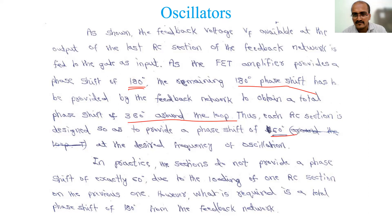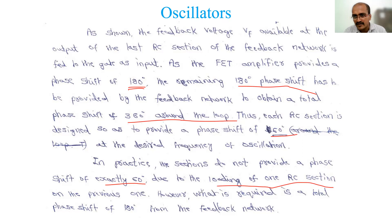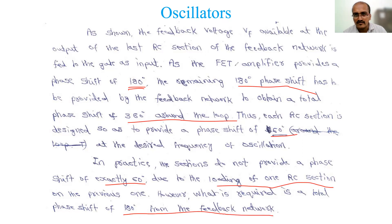Each RC section is designed to provide a phase shift of 60 degrees. However, in practice the sections do not provide exactly 60 degrees each due to loading of one RC section on the previous one. The first section may give more than 60 degrees, the second less, and so on, but together all three angles sum to 180 degrees total from the feedback network, which is what is required.